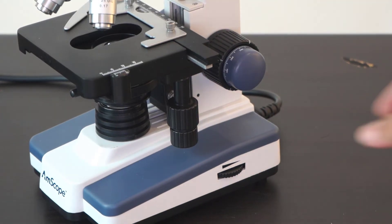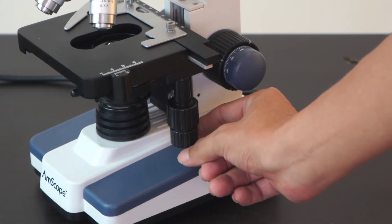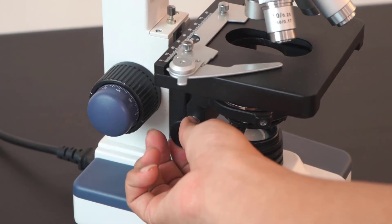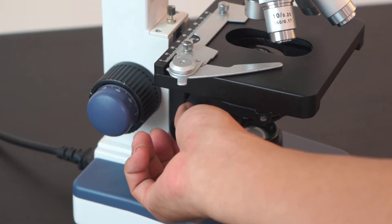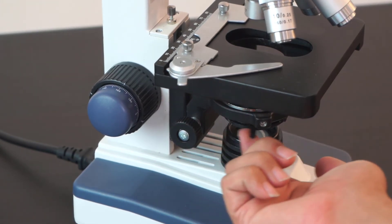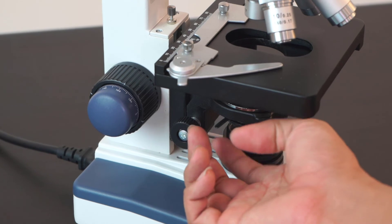To move the stage, you can use the mechanical knob. To control the amount of light hitting the slide, you can use the condenser adjustment knob. To control the background brightness, you can use the iris adjuster.